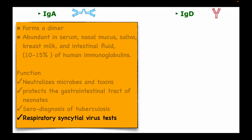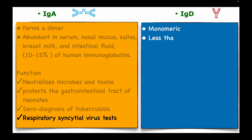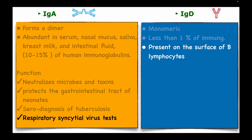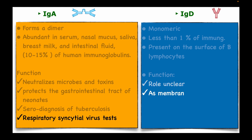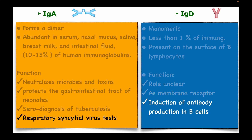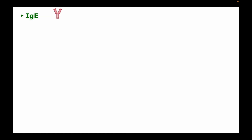Immunoglobulin D is a monomer, forming less than one percent of all human immunoglobulins, and is always present on the surface of B lymphocytes. Its function is not well known and its role in the immune system is not entirely clear; however, it acts as a membrane receptor and is involved in the induction of antibody production in B cells.